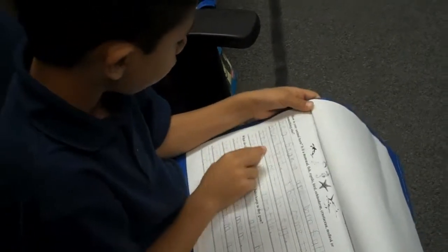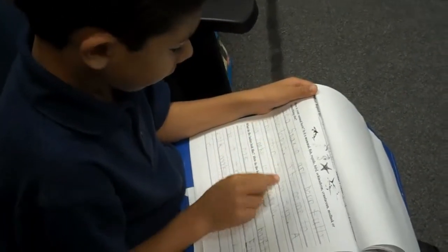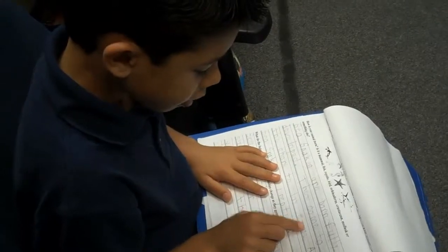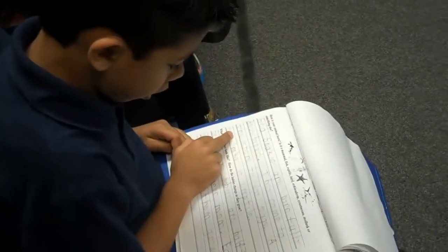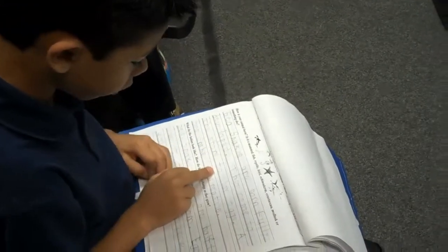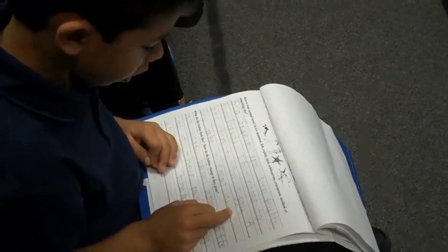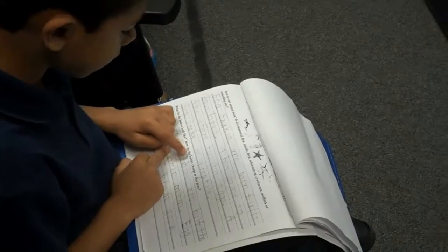They are born fully developed. They come to the shore to lay eggs. A sea snake is a reptile.